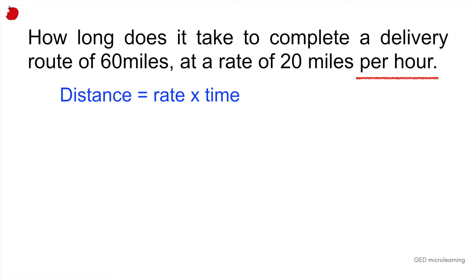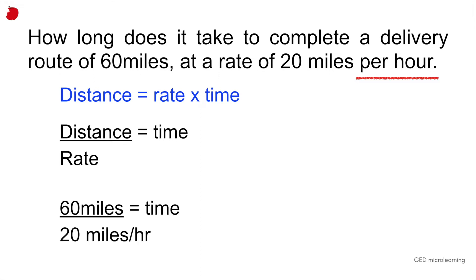In the question they're giving us the distance and the rate and they want us to find how long it takes or the time. So you would rearrange this formula to say that distance divided by rate is equal to the time. When you take the information from the question, it tells you that the delivery goes 60 miles. So that's the distance and it goes at a rate of 20 miles per hour. So you would divide 60 by 20 to get the time, which is three hours.